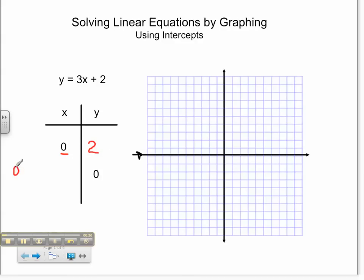I also want to find out when y equals 0, what is x equal? So 0 is equal to 3x plus 2. Then I know negative 2 is equal to 3x, and therefore x is equal to negative 2 thirds.